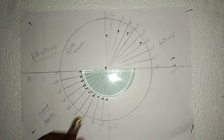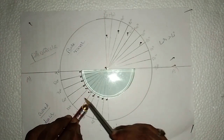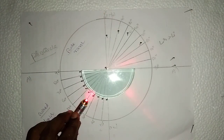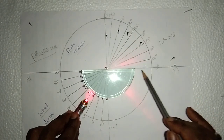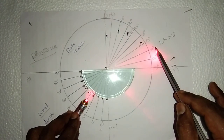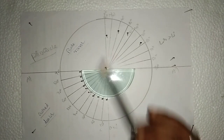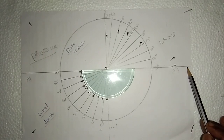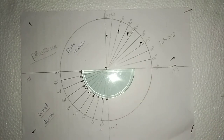That angle is called critical angle. The angle of incidence is somewhere between 40 and 50 degrees. When the light ray travels from denser to rarer at a particular angle of incidence, the light ray grazes the interface of both rarer and denser media. Such an angle of incidence is called the critical angle.